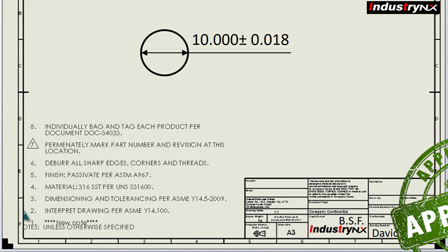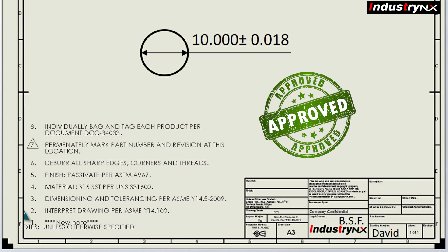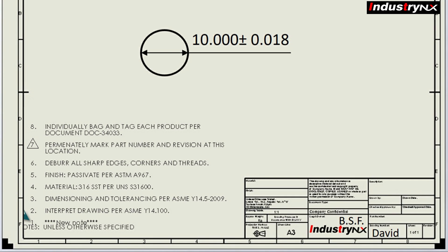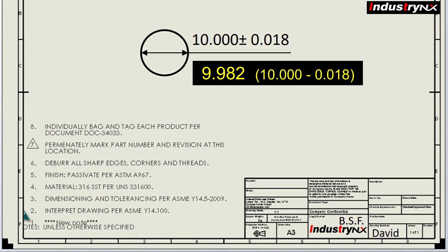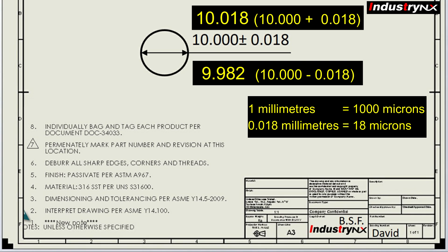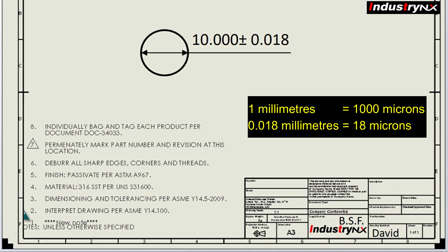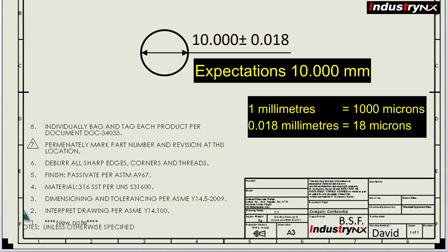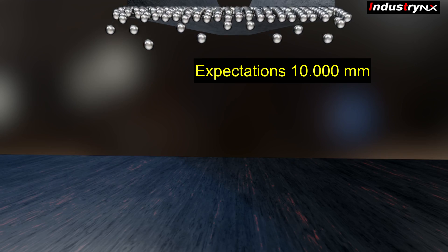Let us assume the designer releases the manufacturing drawing and permits to use ball sizes between 9.982 mm to 10.018 mm, that is 10 plus and minus 18 microns limits. But the designer will always expect more balls closer to 10.000 mm sizes to get best performance.